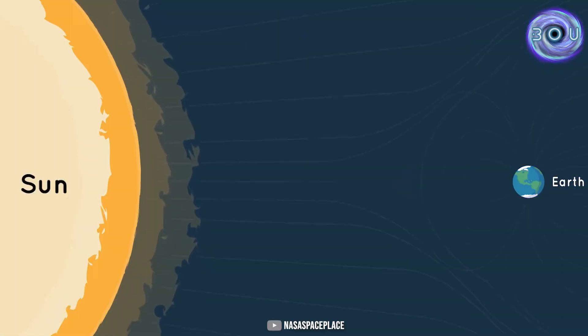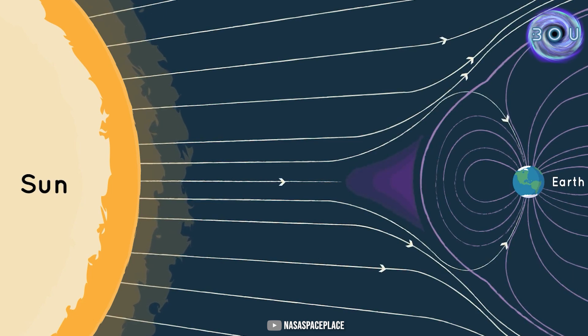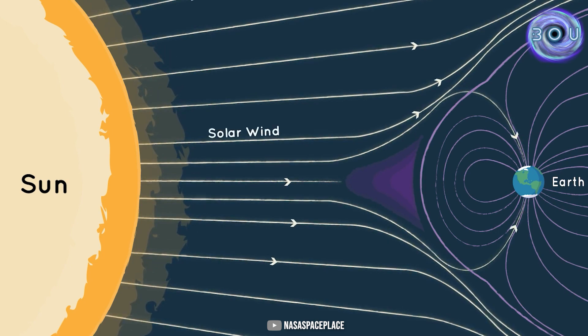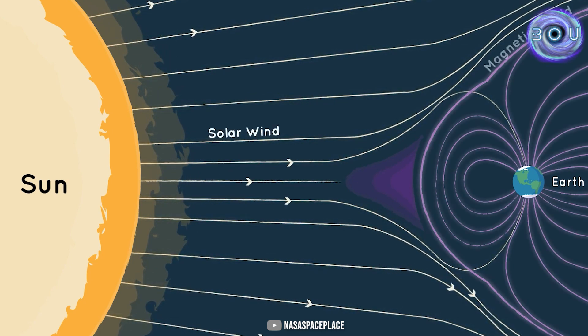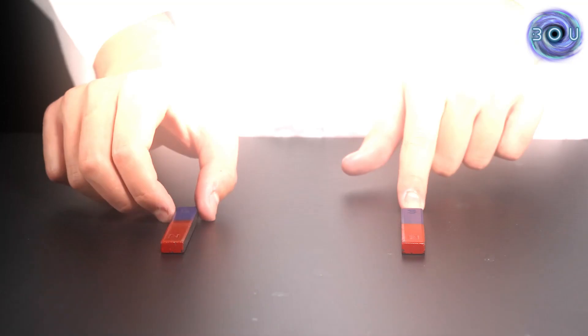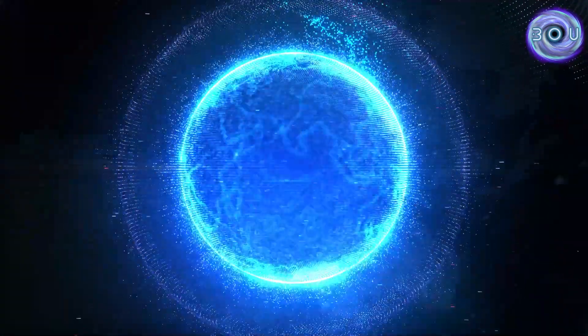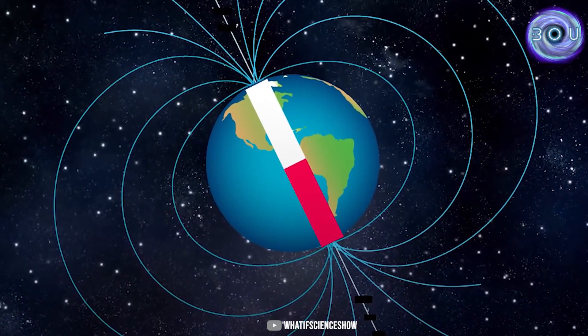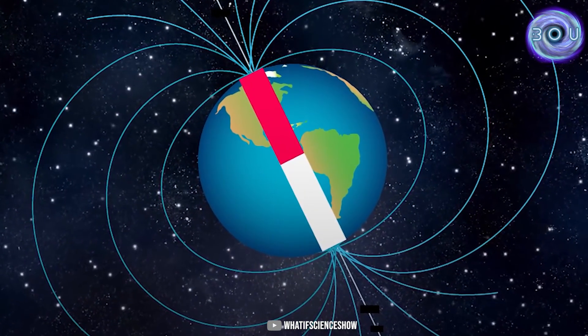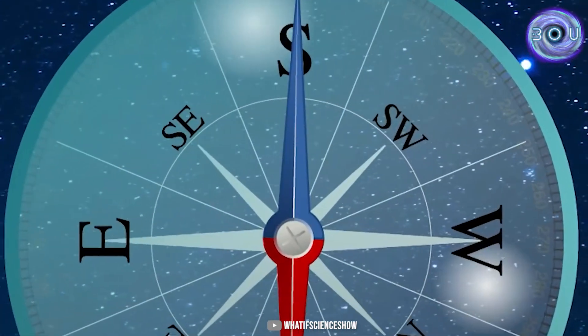When a solar storm, which carries charged and energetic particles, collides with the Earth, it is absorbed by the Earth's magnetic fields and transported to one of the Earth's poles. Exactly like a magnet that has north and south poles, Earth also has these poles, where the north pole is designated as the N pole and the south pole as the S pole.